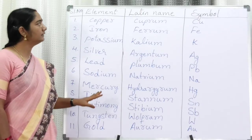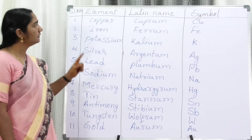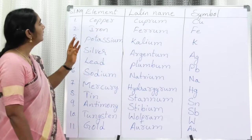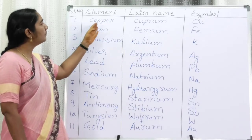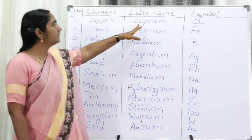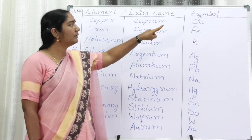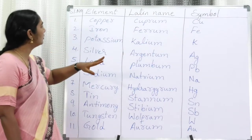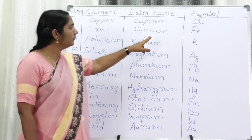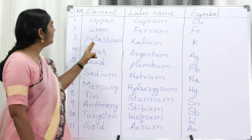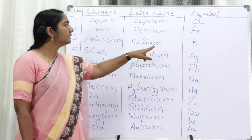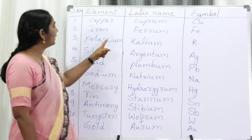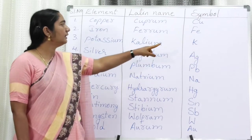In some particular cases, the symbols are based on the Latin name — so please memorize these as well. For example, copper: the Latin name is Cuprum, so the symbol is Cu (capital C, small u). Always the first letter is capital and the second is small. Next is iron: the Latin name is Ferrum, so the symbol is Fe. Potassium: the Latin name is Kalium, so the symbol is K — this is why K is not the first letter of the English word potassium.